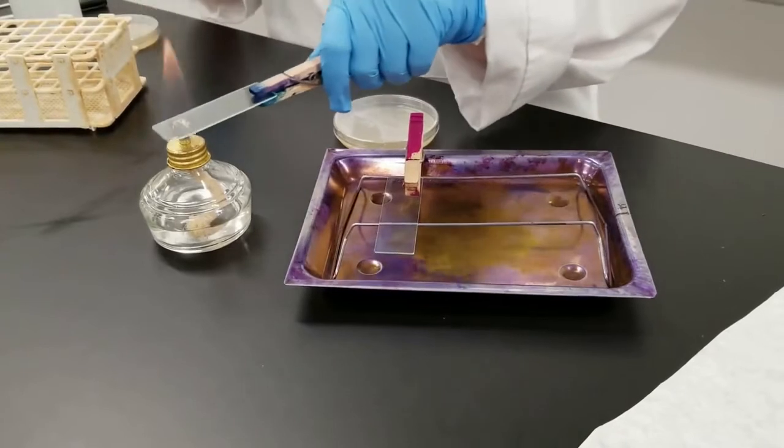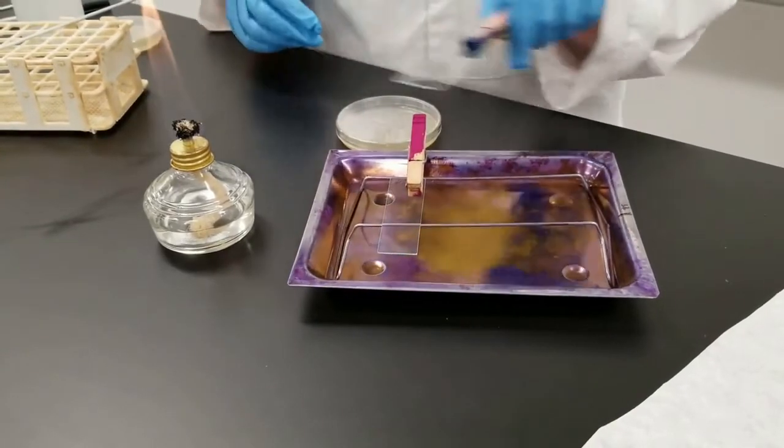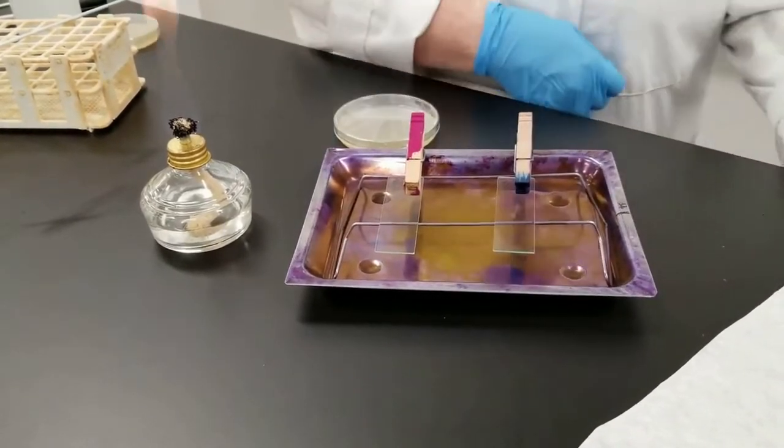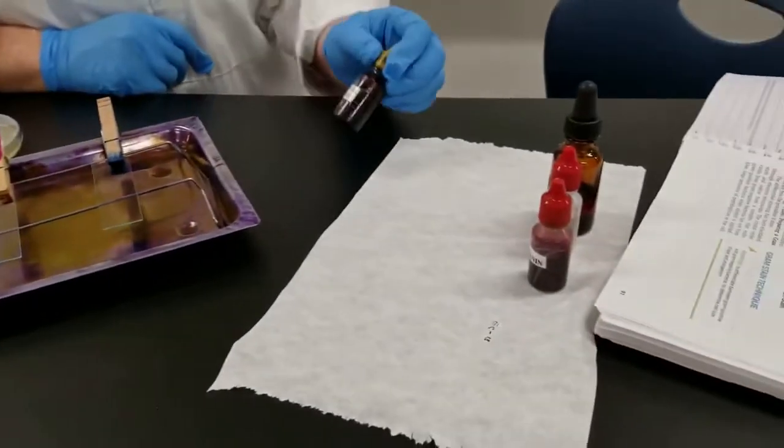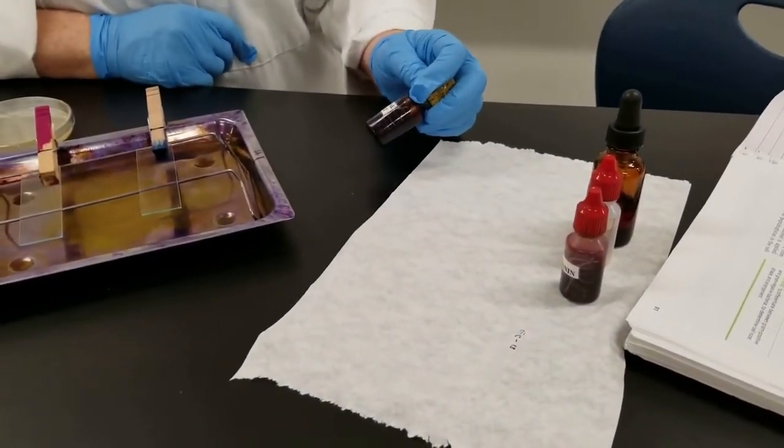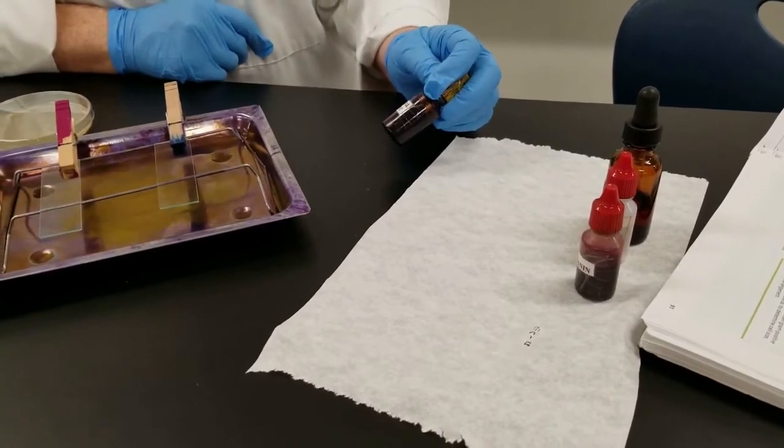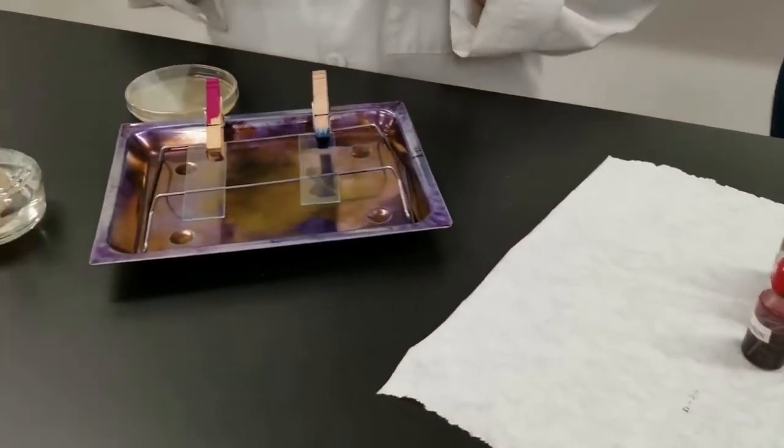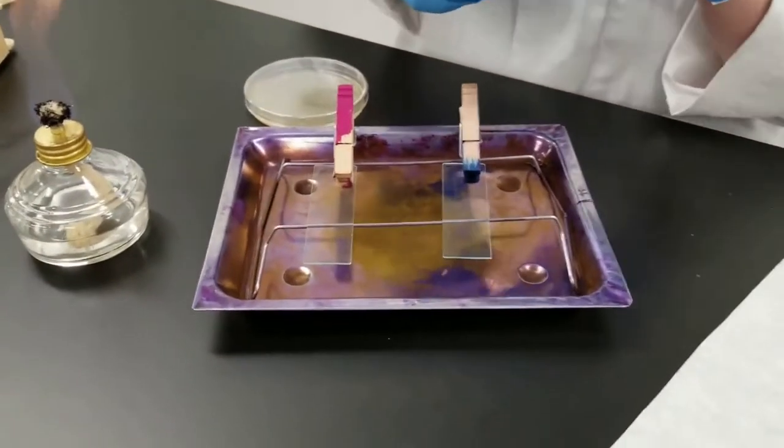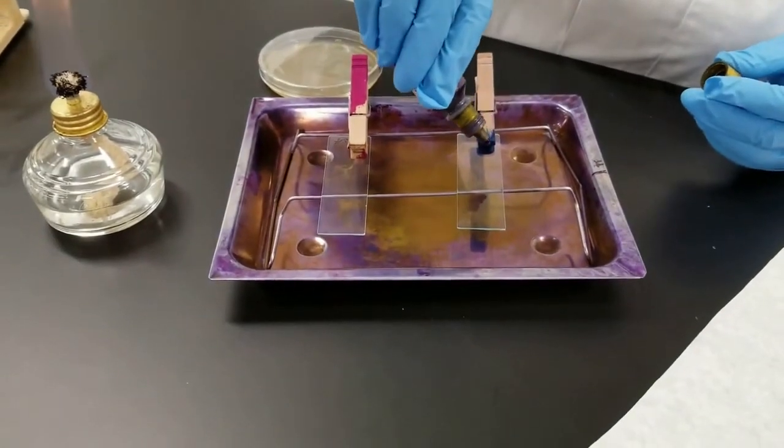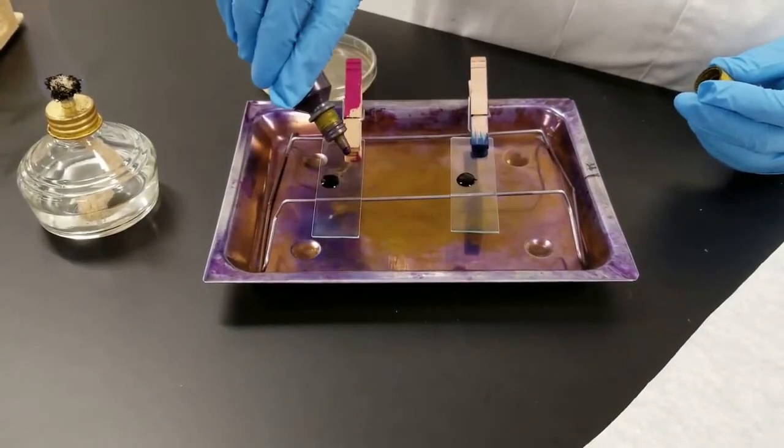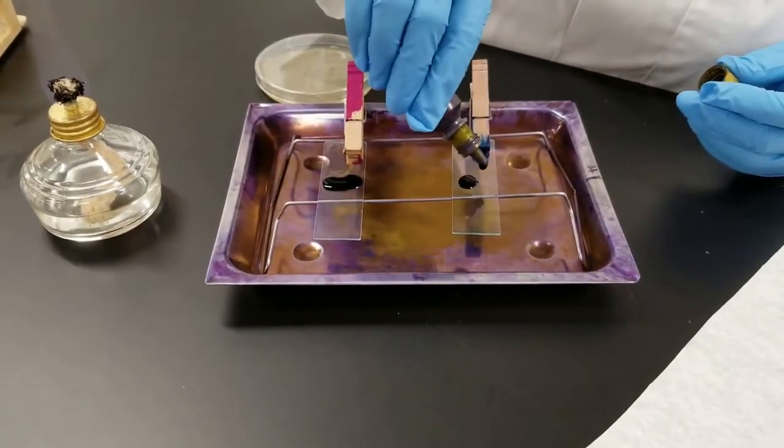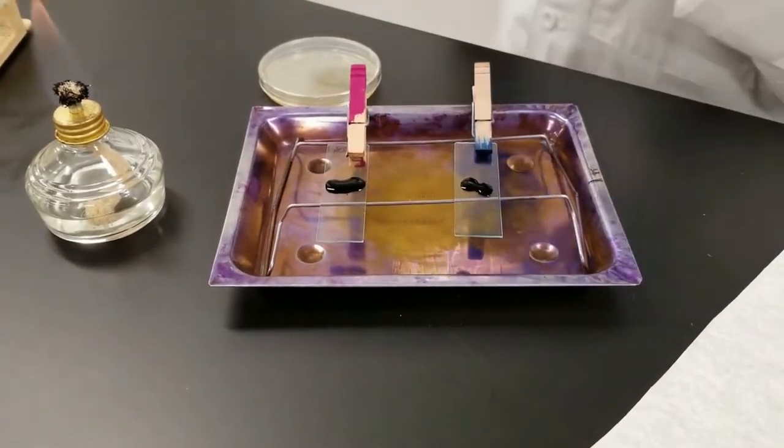And I'm now going to heat fix. Pass the slide through about three times. Now with the Gram stain, there's four different steps to this. The first step, we are adding Crystal Violet. We need to keep track of the time. We're going to add this, and I'm going to do both slides at the same time. Try to add a drop over the top of where you did your smear. You may need to add a couple drops on there, and let that sit for one minute.